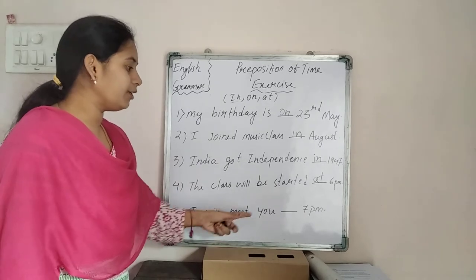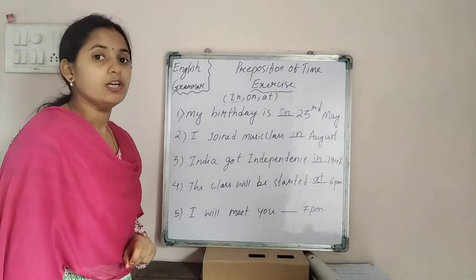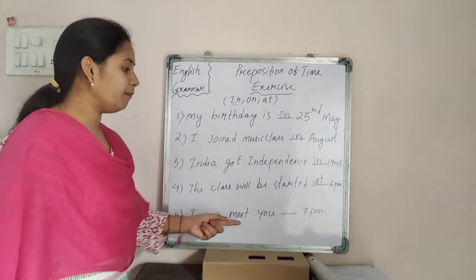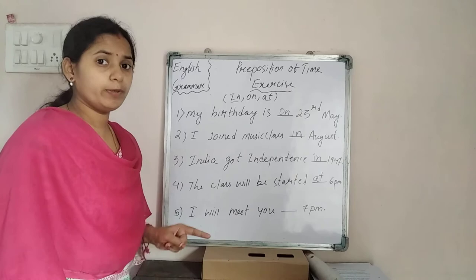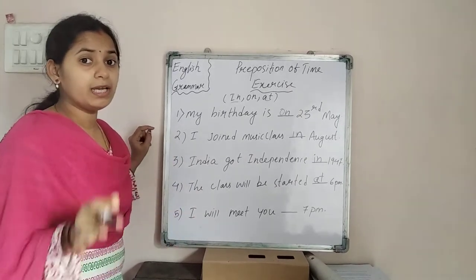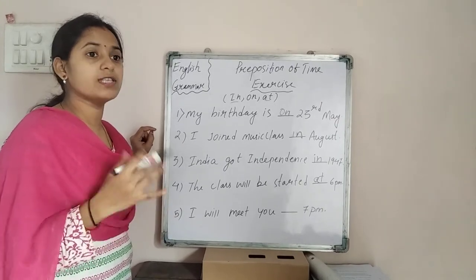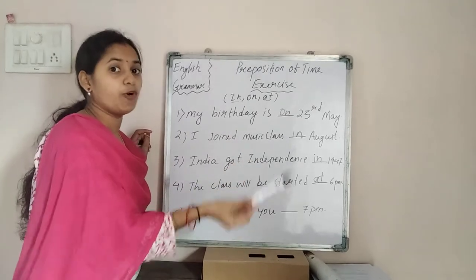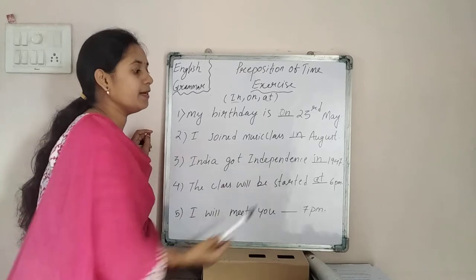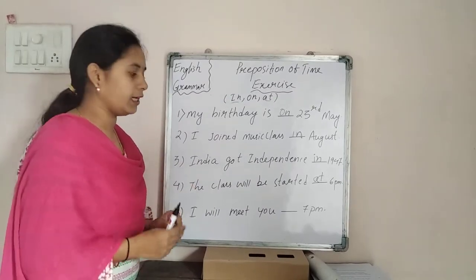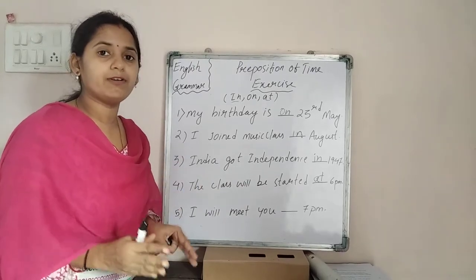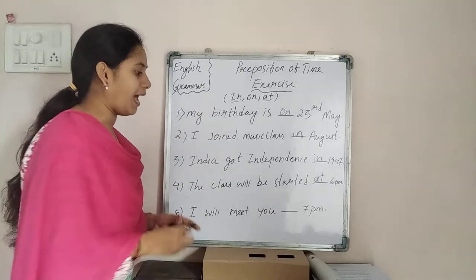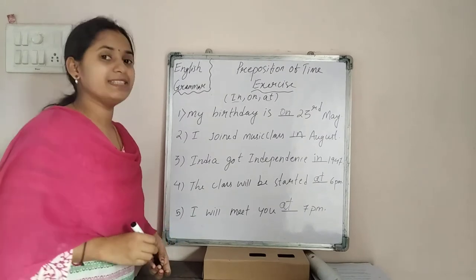The next question: I will meet you at 7 PM. This is similar to the previous one — a particular time is given, so we use at. I will meet you at 7 PM. To recap: if a date is there, use on; Sunday or Monday, use on. Before a month or year, use in. For a particular time or short interval, use at — for example, at night.